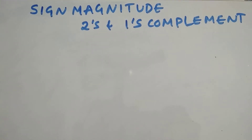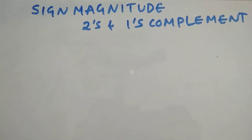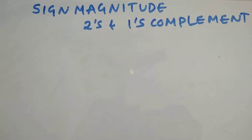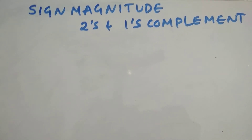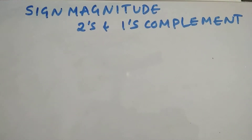Hey guys, welcome back. Today's topic is about how we can represent signed binary numbers in signed magnitude, two's complement, and one's complement.